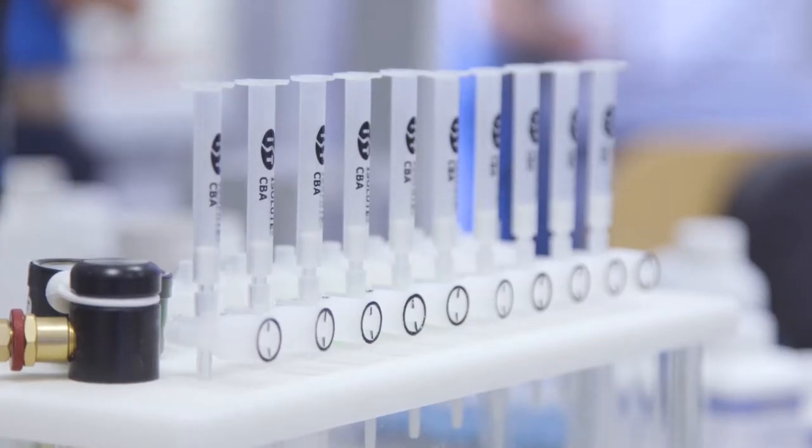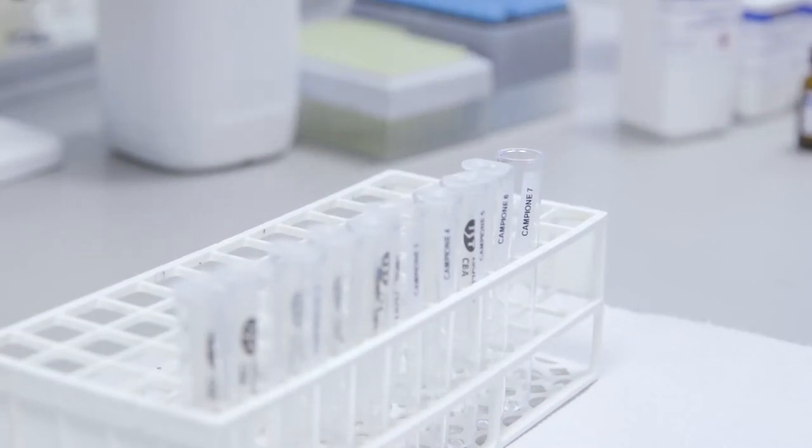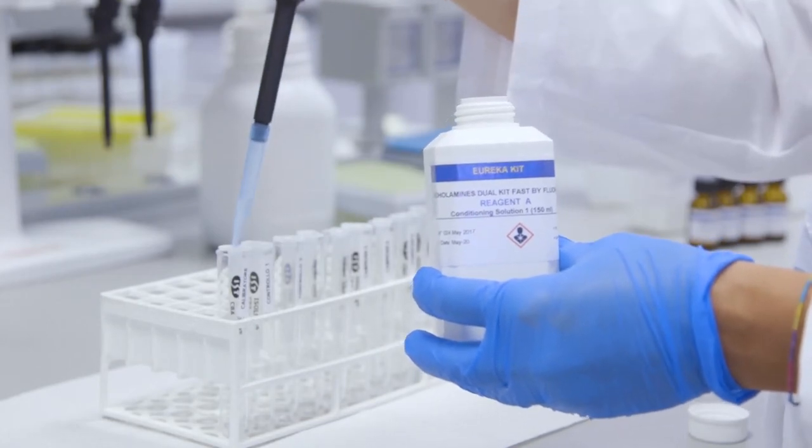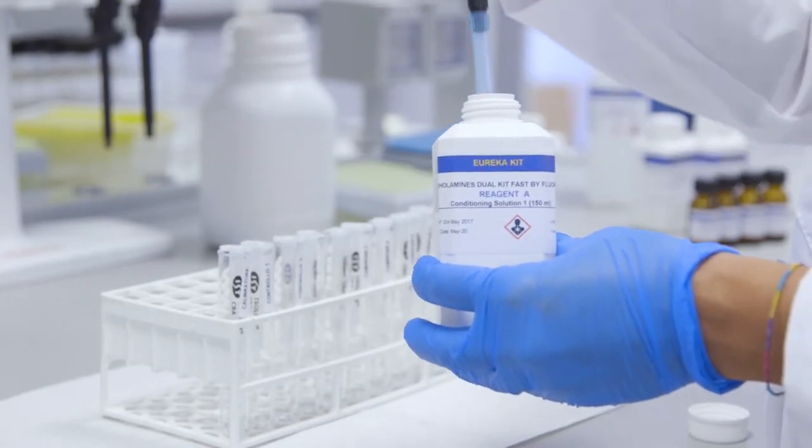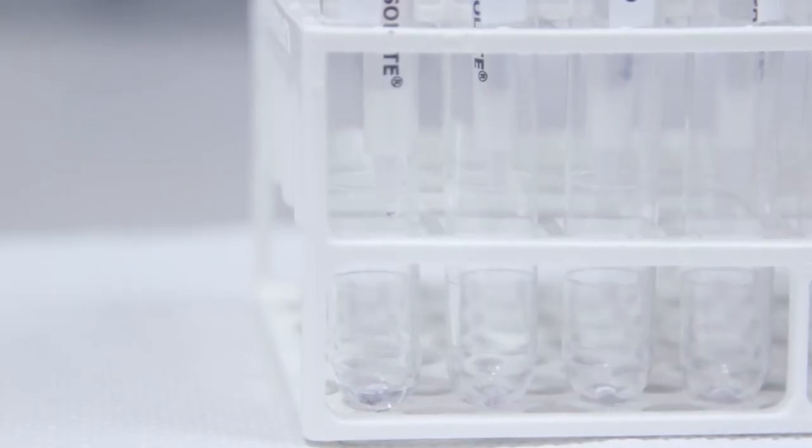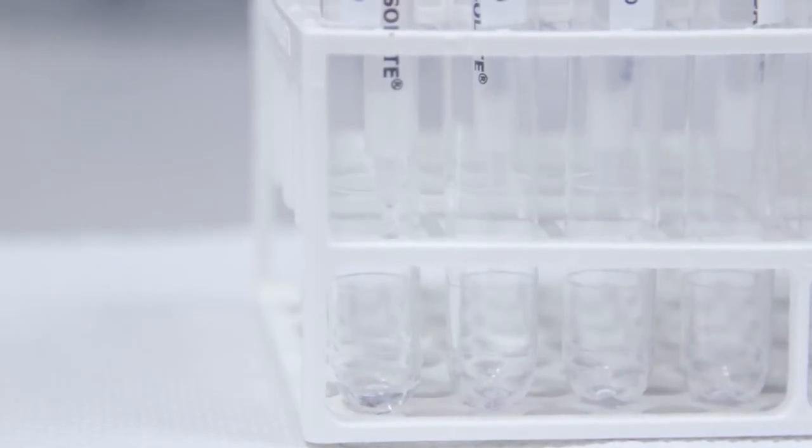We place the SPE column in the plastic tubes in order to collect the eluate to be discarded. Activate the SPE column by pouring into the column one milliliter of reagent A conditioning solution one and let it percolate through the column at a flow of one milliliter per minute drop by drop.